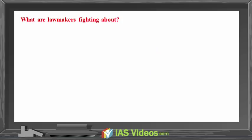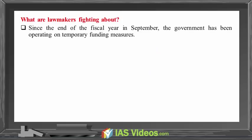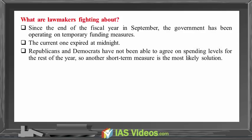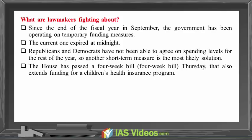What are lawmakers fighting about? Since the end of the fiscal year in September, the government has been operating on temporary funding measures, and the current one expired at midnight. Republicans and Democrats have not been able to agree on spending levels for the rest of the year, so another short-term measure is the most likely solution. The House has passed a four-week bill.